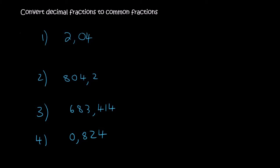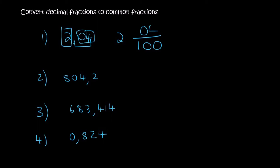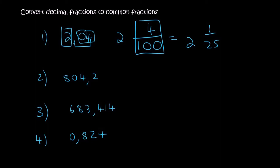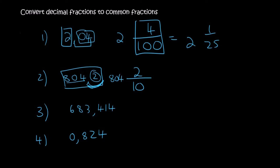Here are four more questions. For the first one, there are two decimal places so it's written over 100. You leave the whole number in front and write just 4 (not 04) at the top — giving 2 and 4 over 100, which simplifies to 2 and 1 over 25. For 804.2, you ignore the 804 and look at the one decimal place: that's 2 over 10, with 804 in front, simplifying to 804 and 1 over 5.